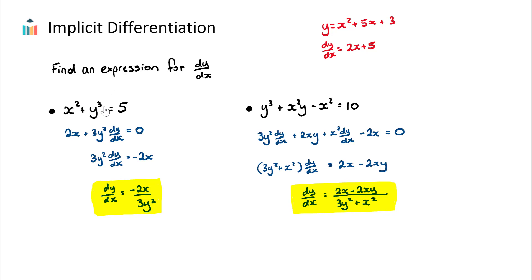We look at every single term and take the derivative of those terms with respect to x — this is the process of differentiating both sides implicitly with respect to x. The derivative of x² with respect to x is just 2x. But the derivative of y³ with respect to x requires the chain rule, because we need to take the derivative of the outside function, which would be 3y².